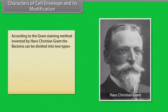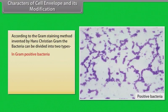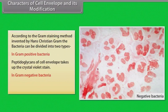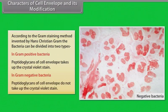According to the Gram-staining method invented by Hans Christian Gram, bacteria can be divided into two types. In Gram-positive bacteria, peptidoglycans of the cell envelope take up the crystal violet stain. In Gram-negative bacteria, peptidoglycans of the cell envelope do not take up the crystal violet stain.